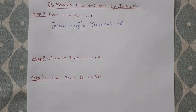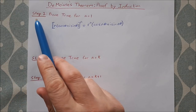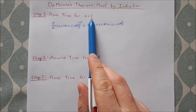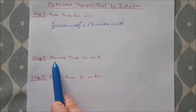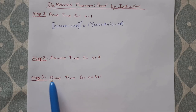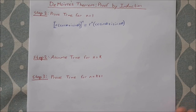In this video I'm going to have a look at the formal proof of De Moivre's theorem using induction. For doing a proof by induction we have step 1: prove true for n equal to 1; step 2: assume true for n equal to k; and step 3: prove true for n equal to k plus 1. Here's De Moivre's theorem — here's what it'll look like in your log tables.